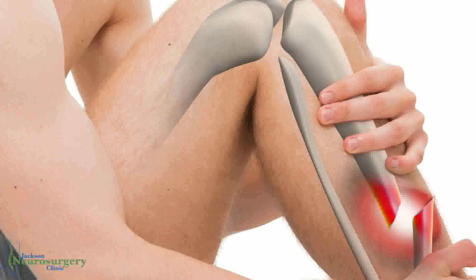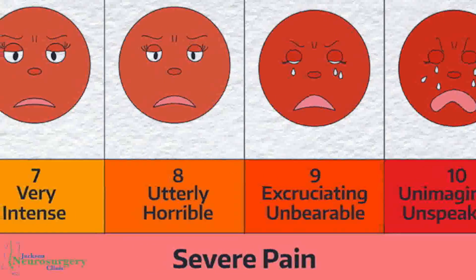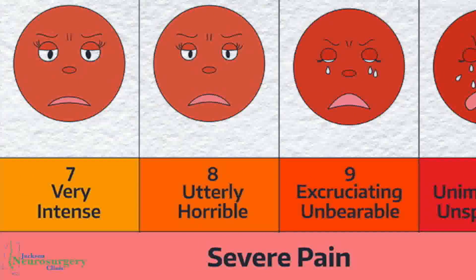When a doctor or other health care provider thinks of 10 out of 10 pain, they are thinking of pain that is severe, such as when someone falls and breaks a bone or has a severe trauma. Someone who is able to walk into an office, sit down comfortably, talk on a cell phone, hold a conversation, smile, laugh, or participate in other social activities without much or any sign of distress is generally not going to be in 10 out of 10 pain, or even 7 or 8 out of 10 pain in most cases.